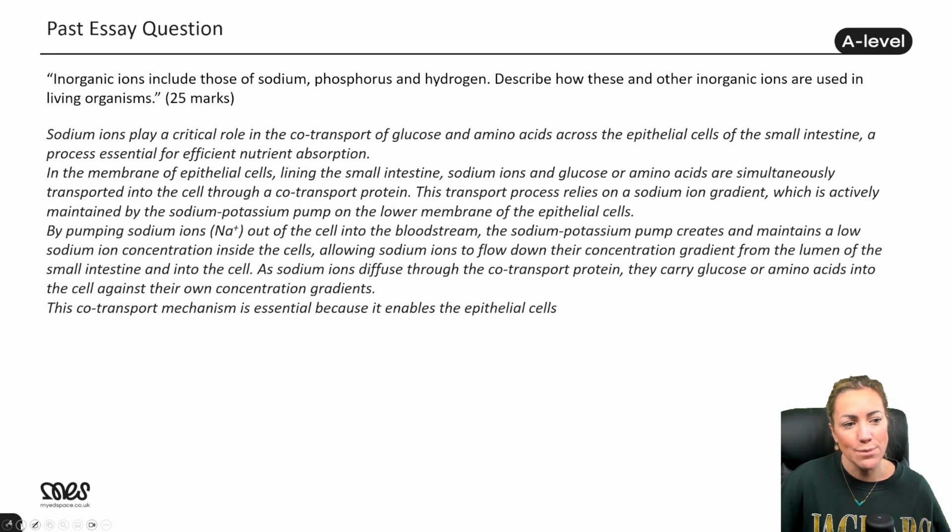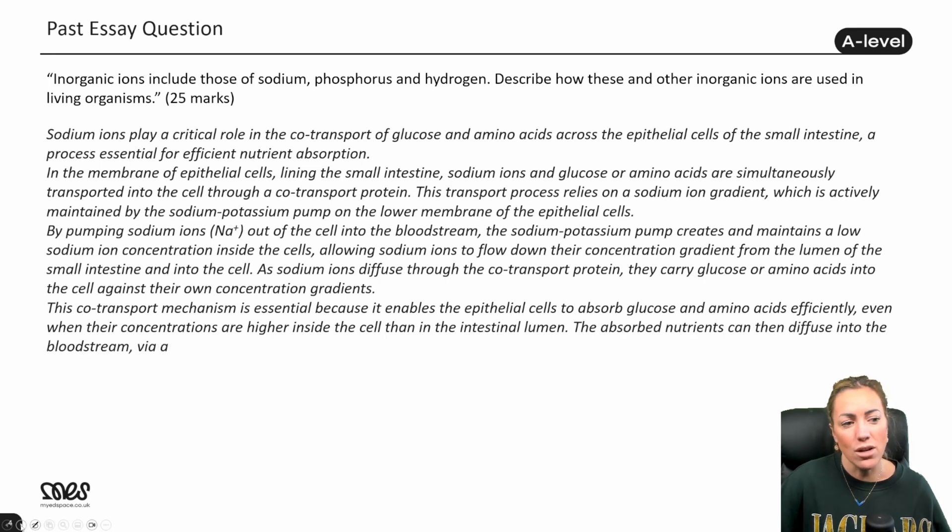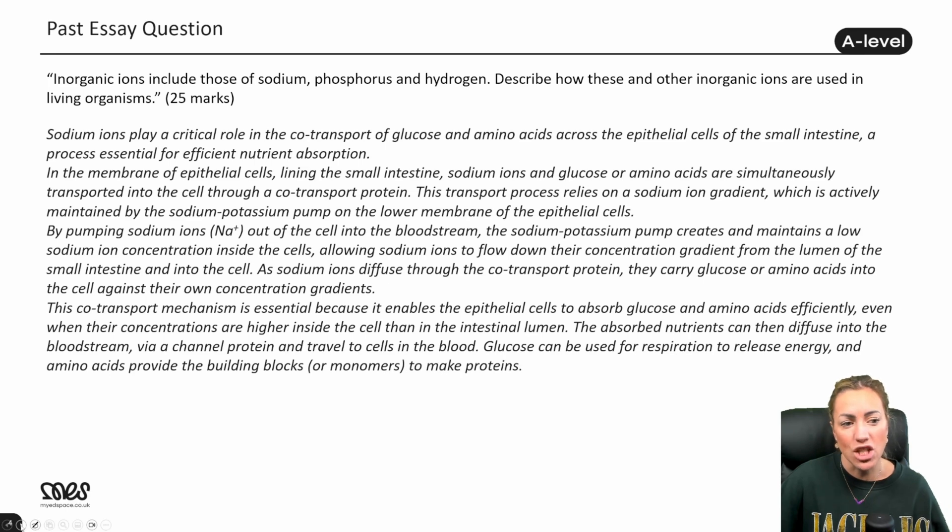This co-transport mechanism is essential because it enables the epithelial cells to absorb glucose and amino acids efficiently, even when their concentrations are higher in the cells than in the intestinal lumen. The absorbed nutrients can then diffuse into the bloodstream via a channel protein and travel to the cells in the blood. Obviously glucose can be used for respiration to release energy or make ATP, and amino acids are going to provide the building blocks so that we can make proteins.